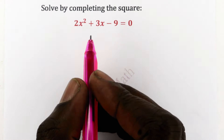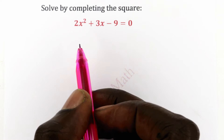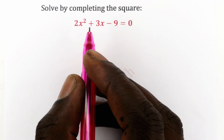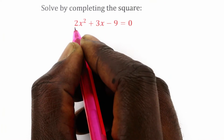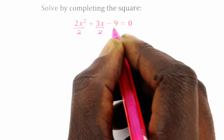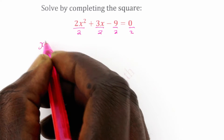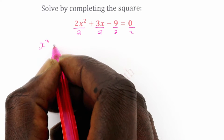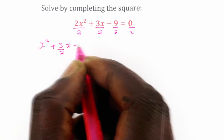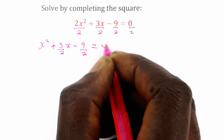With completing the square, you first of all make sure that the coefficient of x squared is 1. So it means we divide by a. In our case, a is 2, so we divide through by 2. What we are left with is x squared plus 3 over 2x minus 9 over 2 is equal to 0.